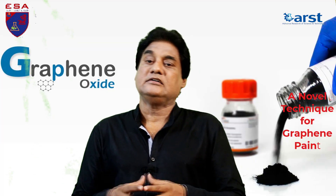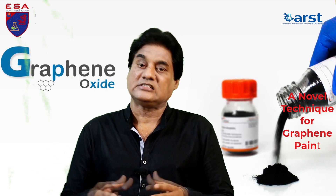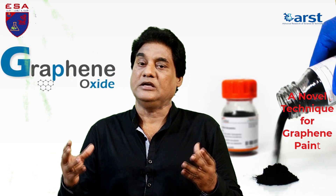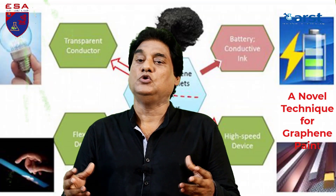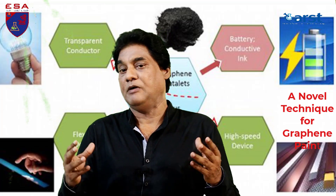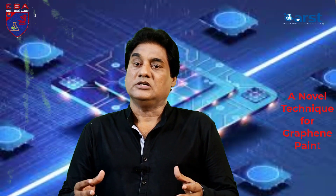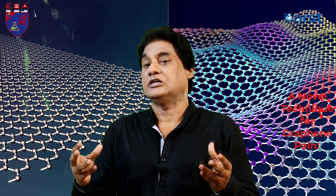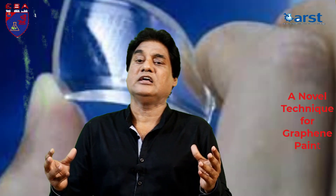Graphene oxide is a new kind of substance that can be utilized to create a stable water dispersion, which can then be used to produce graphene paint. Graphene is used in many industrial and business applications like batteries, solar panels, and transistors. This deceptively basic substance has various benefits — it is remarkably malleable, lightweight, and thin.